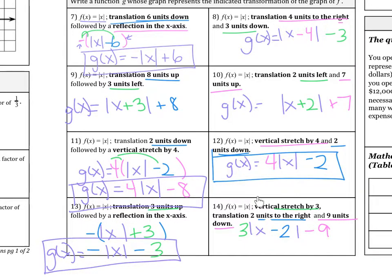The last one, it's 3 transformations. Vertical stretch by 3, then translate 2 units to the right, then 9 units down. So this is 3|x|. We have vertical stretch first, then translate 2 units to the right, so minus 2, then 9 units down. So in the stated order, this is all we have to do. I hope this helps. Thanks for watching.